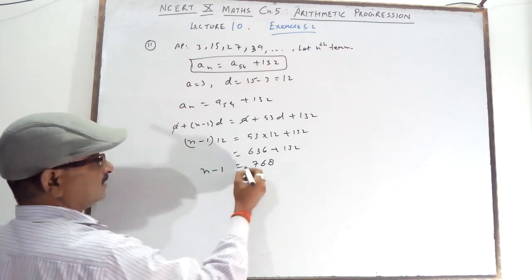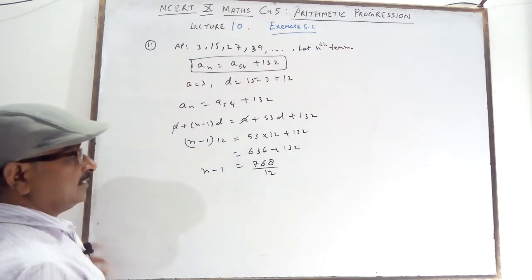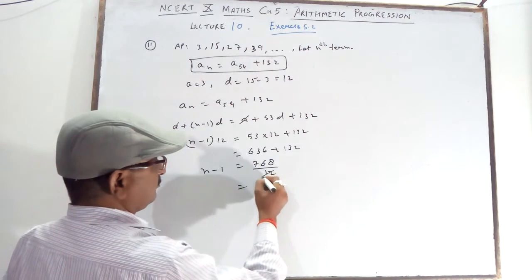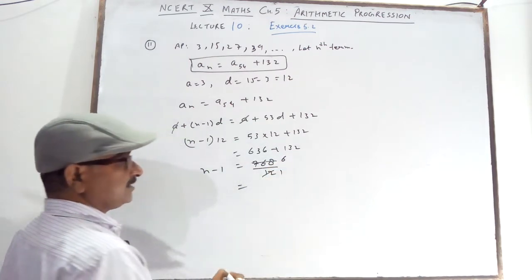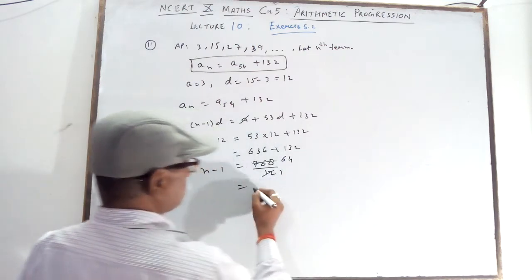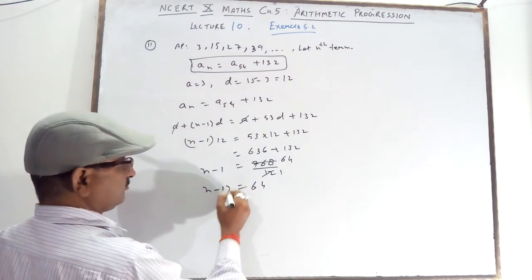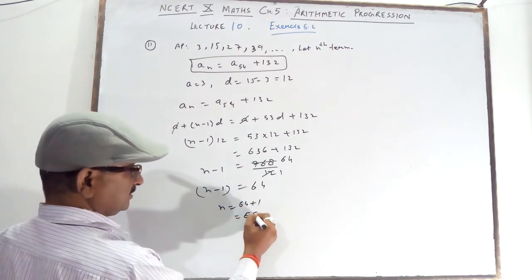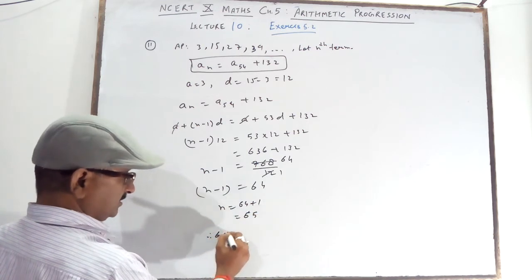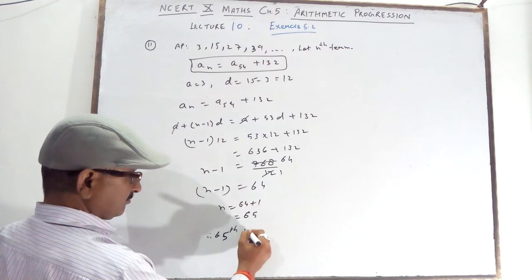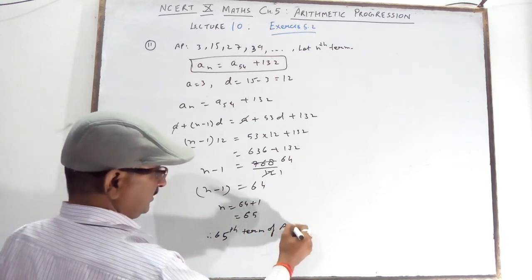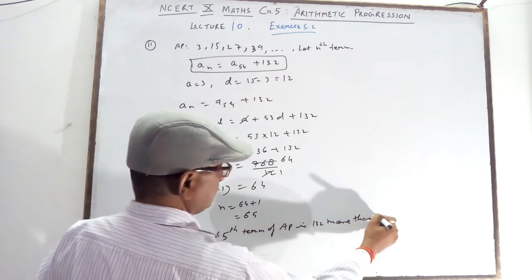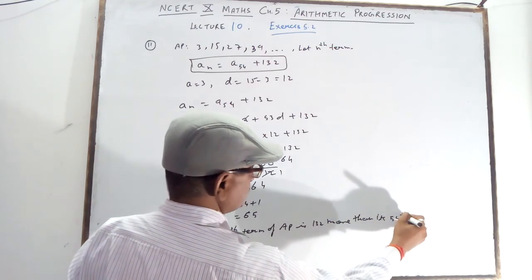N minus 1 is equal to 768 divided by 12, which gives 64. So N is equal to 64 plus 1, which is 65. Therefore the 65th term of the AP is 132 more than its 54th term.